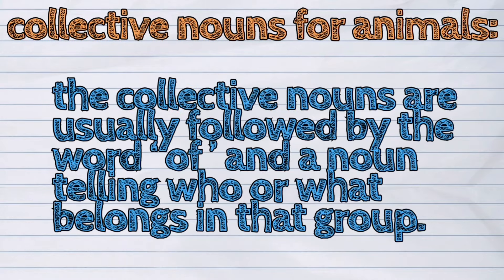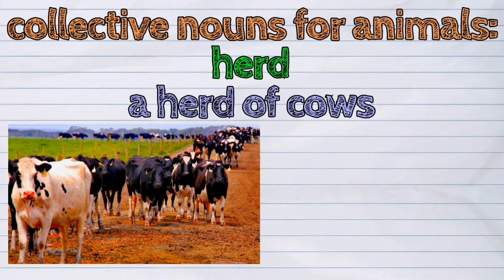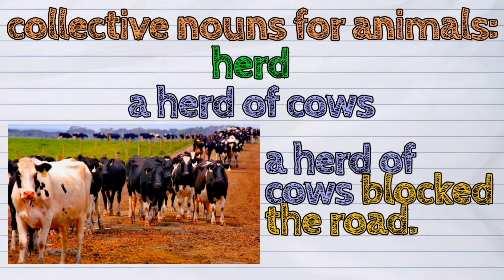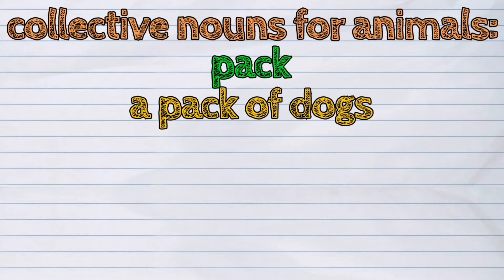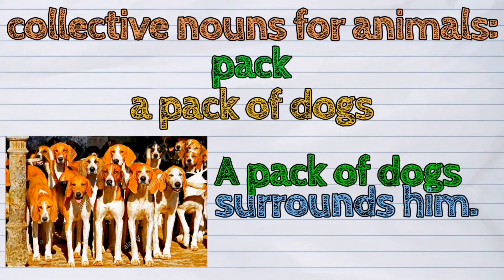For animals, the collective nouns are usually followed by the word 'of' and a noun telling who or what belongs in that group. Examples: Herd — a herd of cows. A herd of cows blocked the road. Pack — a pack of dogs. A pack of dogs surrounds him.